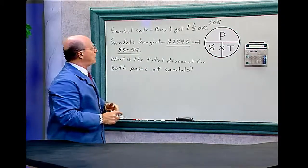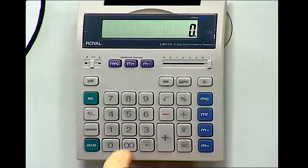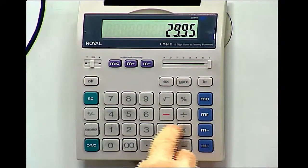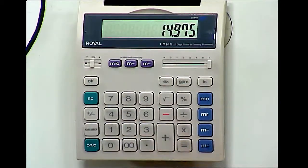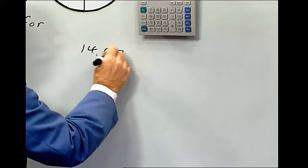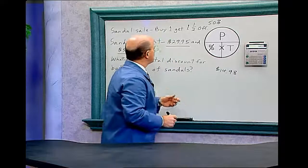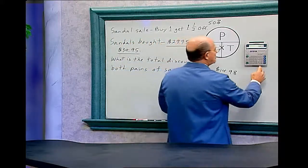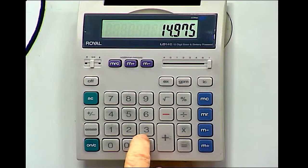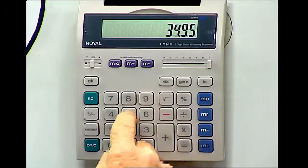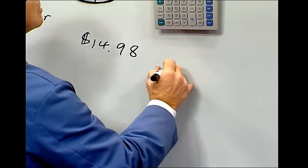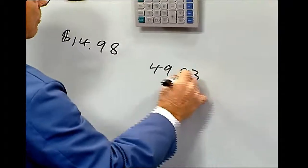Let's find what you paid for the cheaper sandal. $29.95 times 0.5 equals $14.98. So you paid $14.98 for that sandal. Then you also paid the full price of $34.95 for the other. Adding them together: $14.98 plus $34.95 equals $49.93. The total price for both sandals is $49.93.